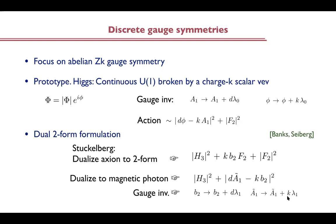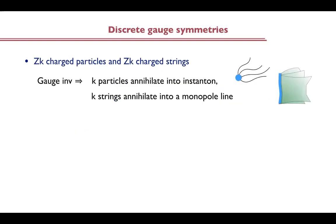Using any description of discrete gauge symmetries, the smoking gun for the existence of discrete gauge symmetries in your theory is Z_K charged particles and Z_K charged strings. The gauge invariance implies certain dynamical properties for the charges. For instance, if you take K particles of charge one, they can annihilate into some process — an instanton that couples to the action. And if you take K strings, they can annihilate into a monopole line. This just follows from the gauge invariance.